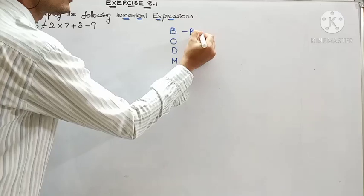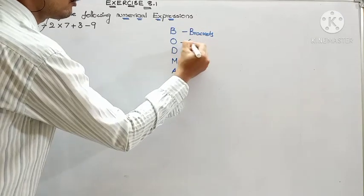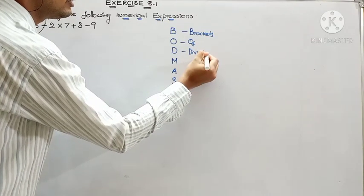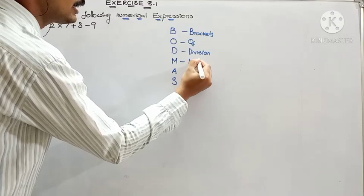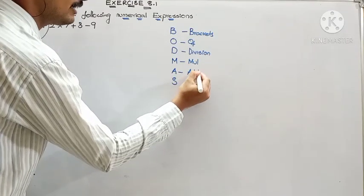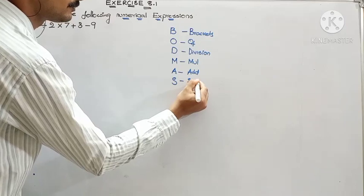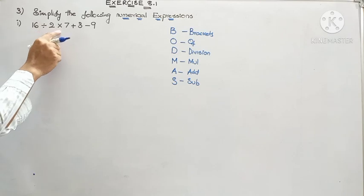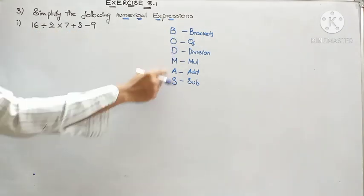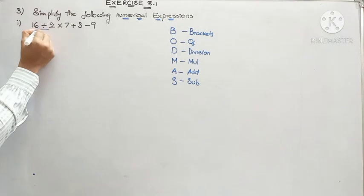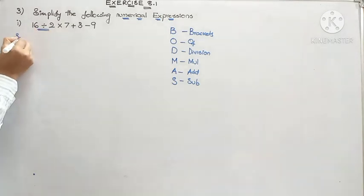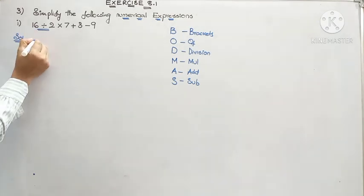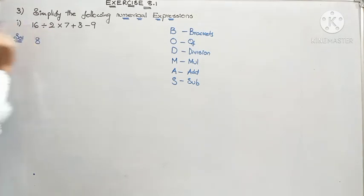We will use the rule of BODMAS: B means brackets, O means of, D means division, M means multiplication, A means addition, S means subtraction. This is the order we have to follow. Of division, multiplication, addition, and subtraction, which comes first? Division. So first we have to take care of division. 16 ÷ 2 gives us 8. We are done with the first step.